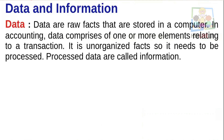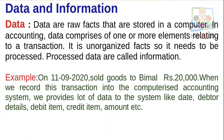Now, Data and Information: Data refers to raw facts that are stored in a computer. When we process that data, we get information. So data is the input and information is the output after processing.